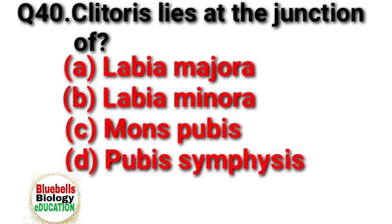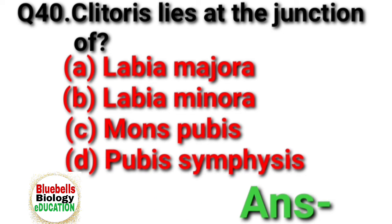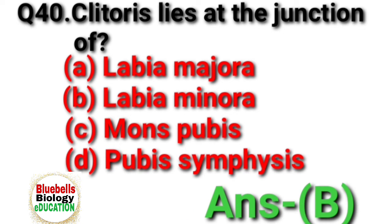Question 40. Clitoris lies at the junction of. Option A: labia majora. B: labia minora. C: mons pubis. D: pubis symphysis. Answer is B.